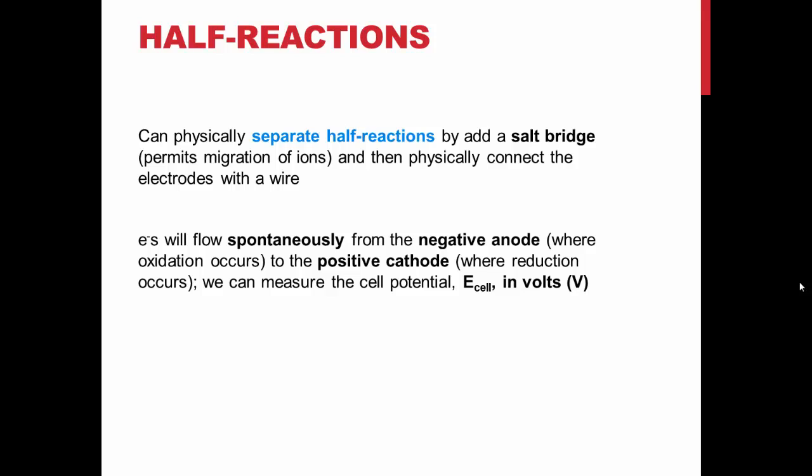Electrons will flow spontaneously from the anode, where oxidation occurs, releasing electrons to the cathode, where ions are reduced, forming a solid. This creates electrical potential, which is measured in volts. There is a diagram of this apparatus and process on page 16-2 of your lab manual.